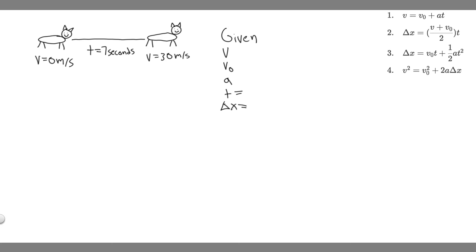You just want to write out whether or not you're given them. So let's start with v. We are given the final velocity - this is called v or v final, you can write either. We know the velocity at the end of our interval is 30 meters per second, so you want to write 30 meters per second.